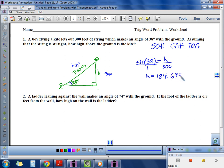184.698 feet. And we rounded to three decimal places because it didn't tell us how to round. Three places is usually pretty good, rule of thumb.